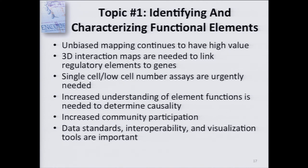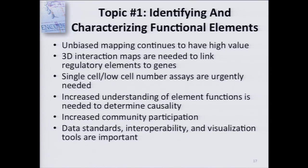On the mapping topic, we heard again about the importance of unbiased mapping of elements and 3D interaction maps — a technique that can be used to predict which regulatory elements may be acting on which genes. We heard about the importance of single-cell and small cell number assays. There was a plea for getting beyond mapping and understanding what elements do, to better understand causality and participation in human traits and diseases. We also heard strong interest in maintaining high data standards, efforts for interoperability, and the importance of data visualization tools.